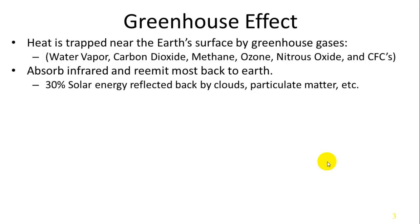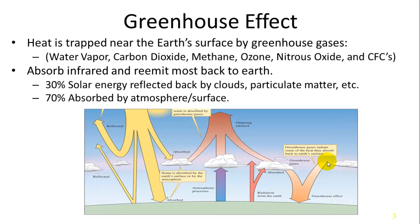About 30% of solar energy is reflected back by clouds or particulate matter such as ash from volcanoes, and 70% of it is absorbed by the atmosphere and the surface. Some of it is reflected and then re-absorbed by water vapor or greenhouse gases, and those greenhouse gases in turn emit the heat back down to the Earth. So if you increase greenhouse gases, the theory is that you're going to increase temperature.